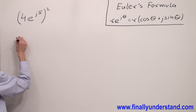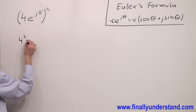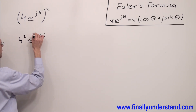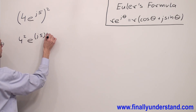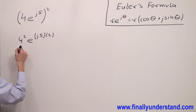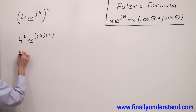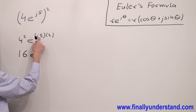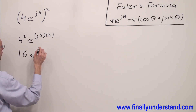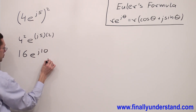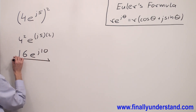So I have 4 to the second power, e to the j5 times 2. 4 to the second power is equal to 16, and 5 times 2 is equal to 10, giving e to the j10. This is the solution to my problem.